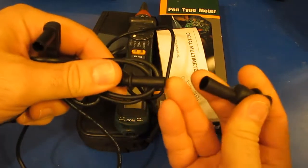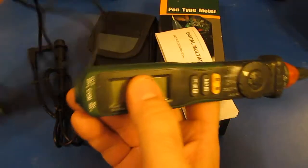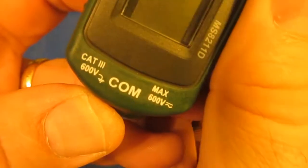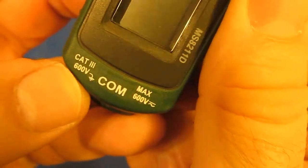One of them has this nice alligator clip. These plug into the back of the meter. This meter costs about $20 US. It's 2,000 counts. You can see the meter is a CAT3 600 volt rated meter.